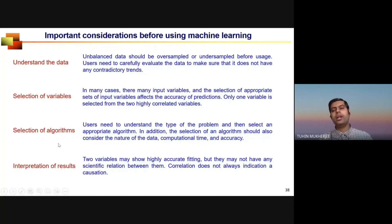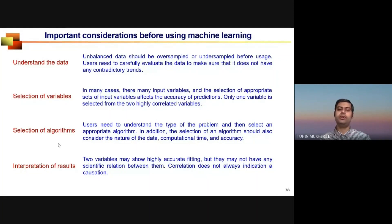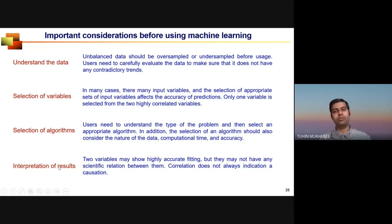The most important consideration is interpreting results correctly. A colleague from statistics used machine learning to study childhood obesity and found that a pregnant mother smoking cigarettes appeared correlated with reduced obesity — which is clearly false. Scientific understanding of the problem is essential to correctly interpret results and modify the model accordingly. We must have domain knowledge to distinguish genuine correlations from spurious ones.